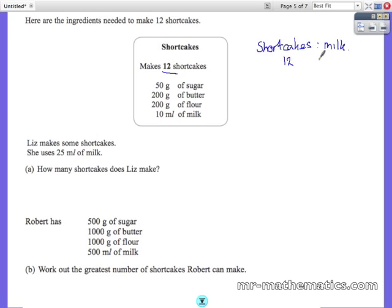And then we will use equivalent ratios to find out how many shortcakes for 25ml. So first of all we will work out for 20ml, which is just double both sides. So 20ml will make 24 shortcakes.